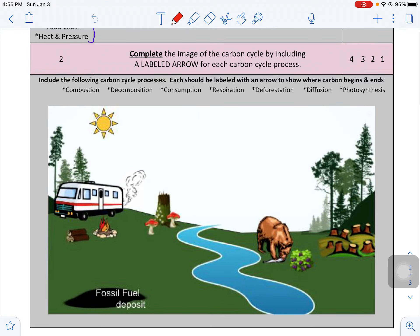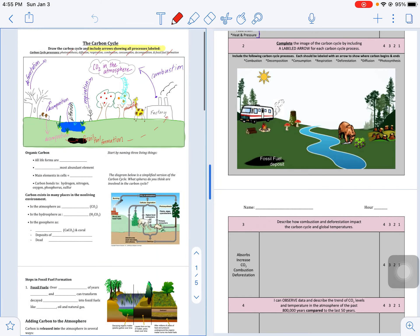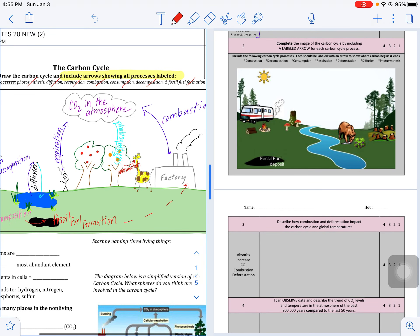Learning target two is simply labeling these different processes on this new carbon cycle diagram. This is supposed to be coming from your notes. You should be able to pull up your picture and do a little comparison.